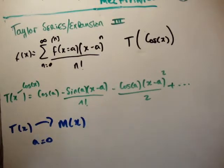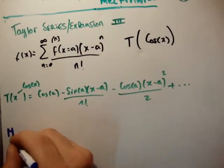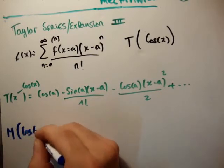We center the function around x is equal to 0 or a is equal to 0. So let's get the McLaren series, or the McLaren expansion of cos x.